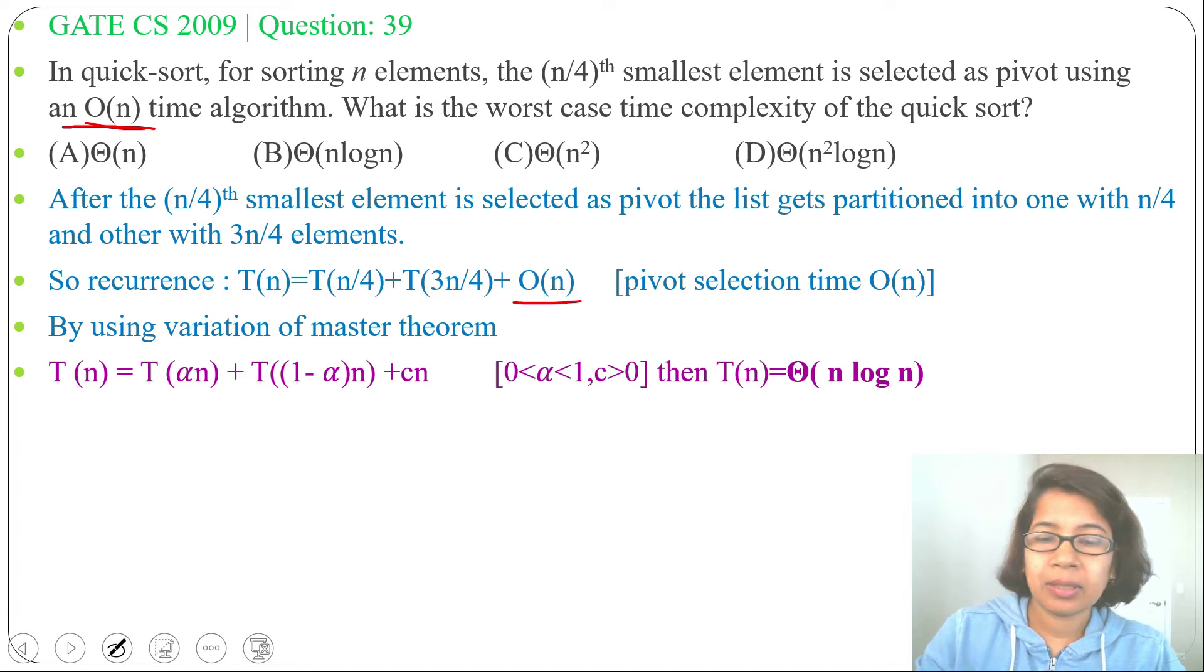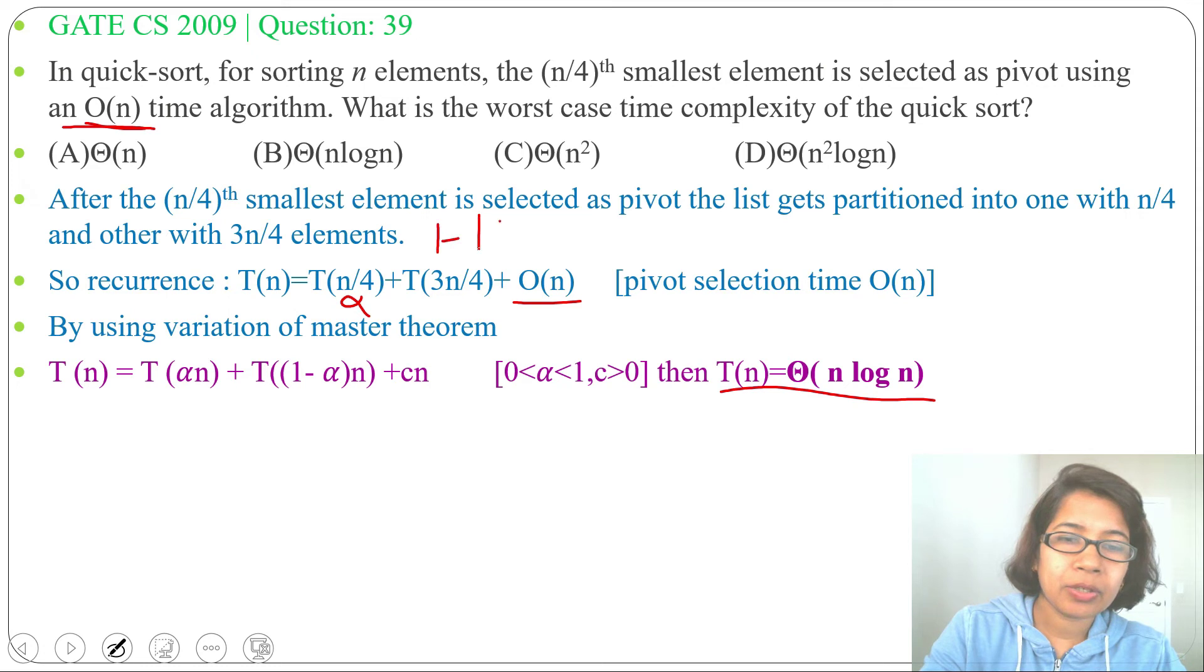then the running time will be Θ(n log n). If 1/4 is our α, then 1 - 1/4 = 3/4, which is our (1-α). So this recurrence relation is in this form, and the running time will be Θ(n log n).